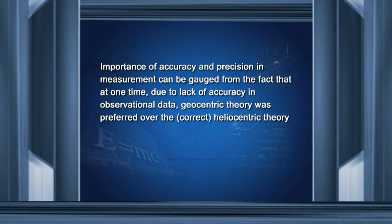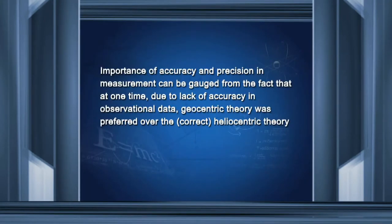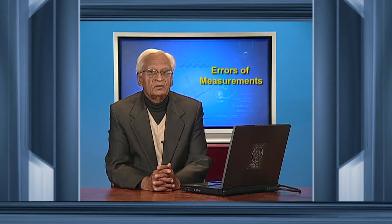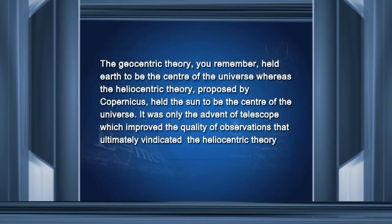The importance of accuracy and precision in measurement can be gauged from the fact that at one time, due to lack of accuracy in observational data, the geocentric theory was preferred over the heliocentric theory, whereas the heliocentric theory was the correct one. The geocentric theory held earth to be the center of the universe, whereas the heliocentric theory proposed by Copernicus held the sun to be the center. It was only the advent of the telescope, which improved the quality of observations, that ultimately vindicated the correct heliocentric theory.